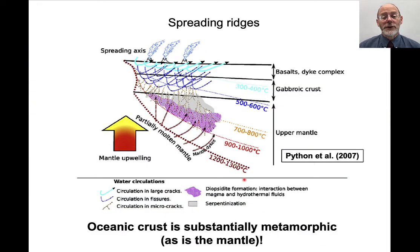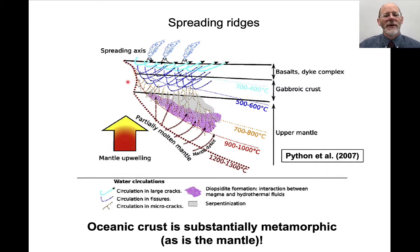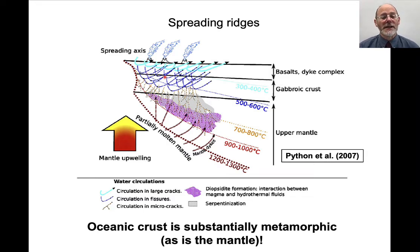Metamorphism also occurs at spreading ridges. We normally think about mid-ocean ridges in terms of igneous processes, but the heat from upwelling and magmatic activity also induces a lot of hydrothermal activity, causing metamorphic reactions to occur in the shallow to deep crust. Much of the oceanic crust, although fundamentally started by igneous processes, can also be considered largely metamorphic. In fact, much of Earth's crust — oceanic crust and continental crust reworked by collisional orogenesis — is metamorphic.